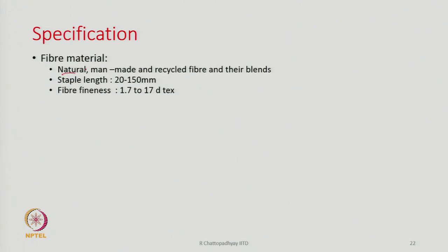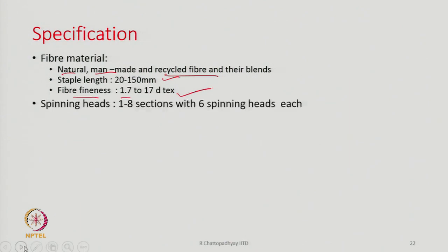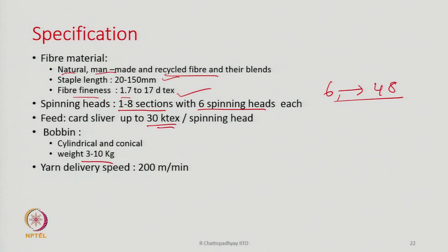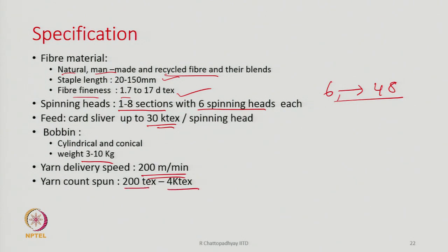Machine specifications: it can handle natural, manmade, recycled fibers and their blends. Staple length 20 to 150 mm. Fiber fineness 1.7 to 17 dtex. Spinning heads 1 to 8 sections with each section having 6 spinning heads, meaning a machine can have 6 to 48 spinning heads. Feed: sliver up to 30 kilotex per head. Bobbin could be cylindrical or conical package of 3 to 10 kg. Yarn delivery speed about 200 meters per minute per head. Yarn count range 200 tex to 4 kilotex.